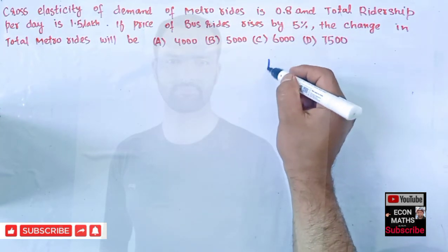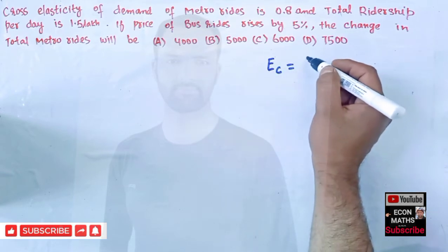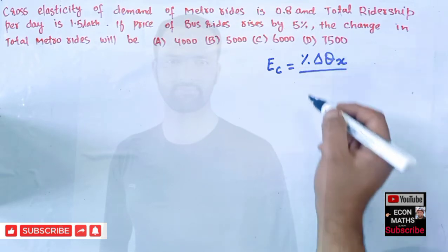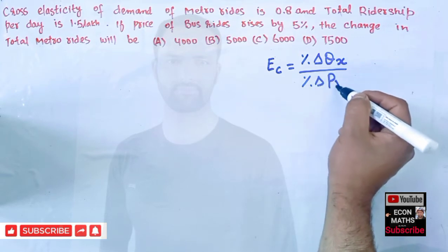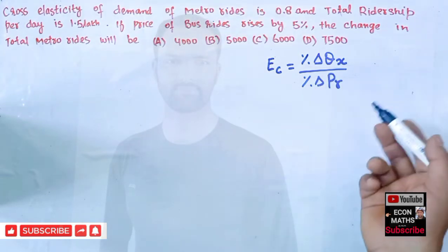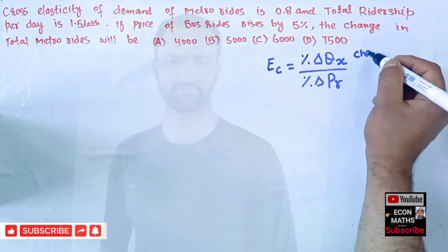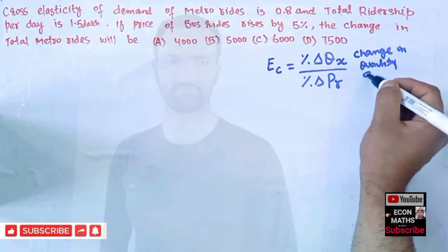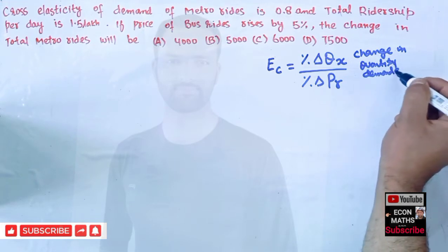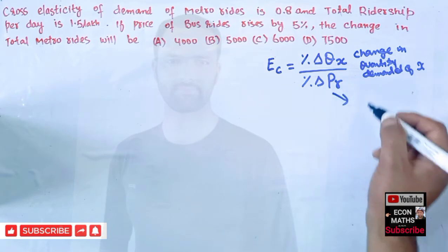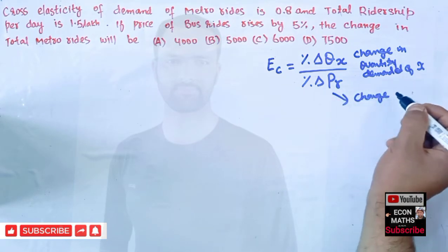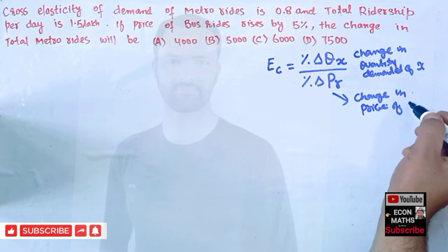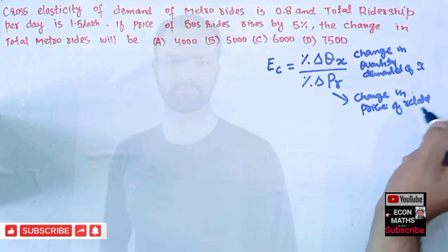Cross price elasticity of demand is given by the formula: percentage change in quantity of X divided by percentage change in the price of a related good or related commodity. So this is the change in quantity demanded of good X, and this is the change in price of the related commodity.